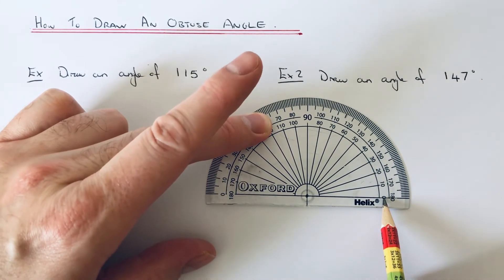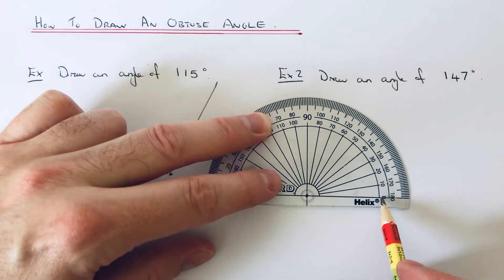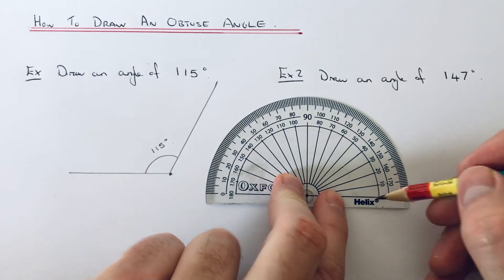So as you can see, the inside zero is on that baseline, not the outside one. So we've got to follow it around on the inside.